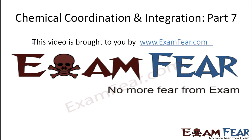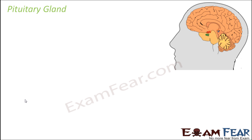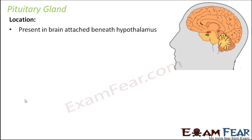This video on chemical coordination and integration part 7 is brought to you by examfear.com. Let us look at the next gland, which is the most important one — the master gland — that is the pituitary gland. It actually controls the secretion from all other glands of the body. First, let us try to understand the structure and location of the pituitary gland, then we will talk about the hormones released from it. It is present in the brain, attached beneath the hypothalamus, located just below it.